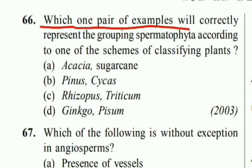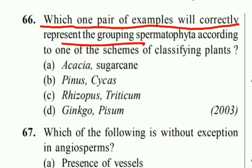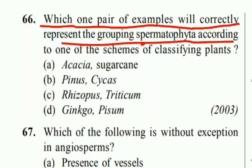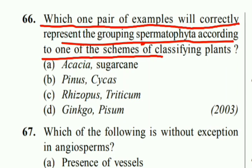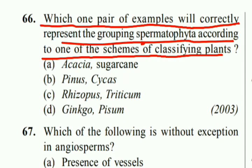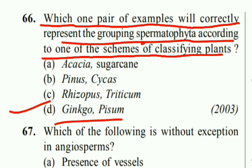Which pair of examples will correctly represent the grouping Spermatophyta according to one of the schemes of classifying plants? Right answer is D: Ginkgo and Pison.